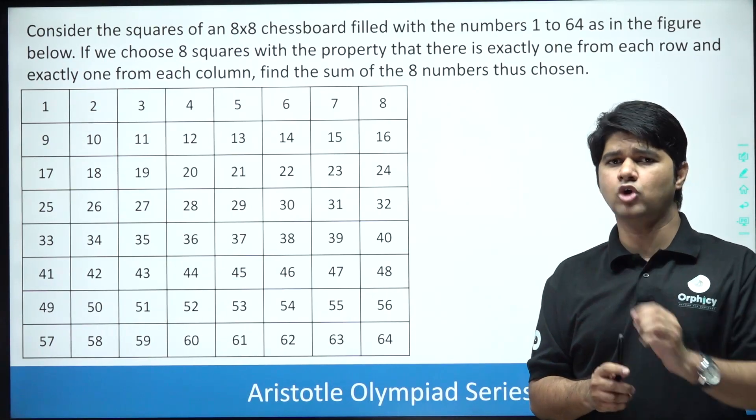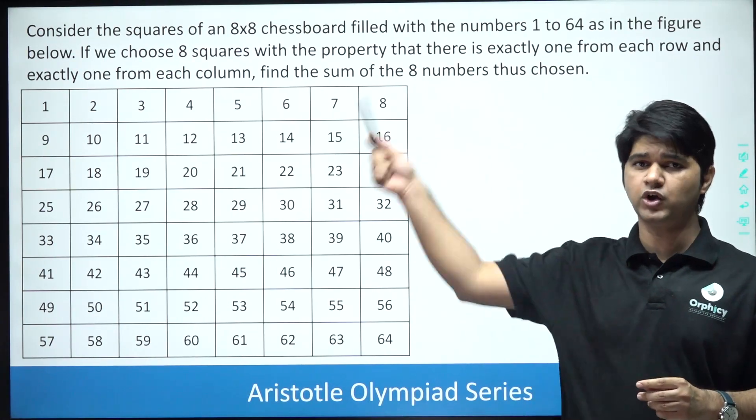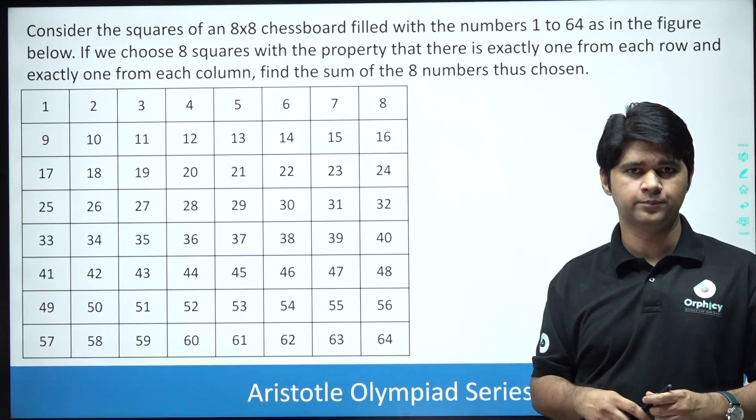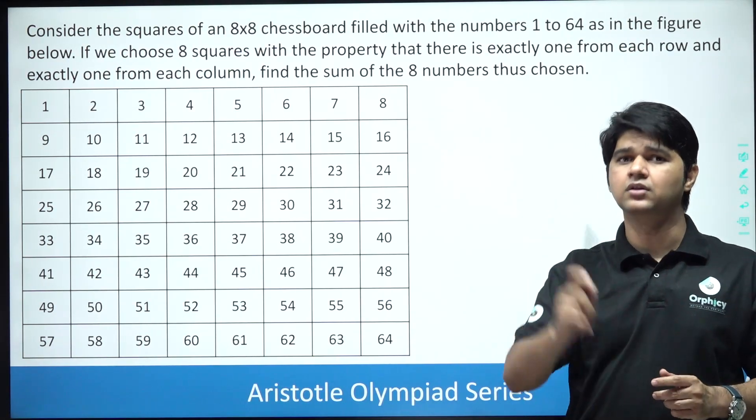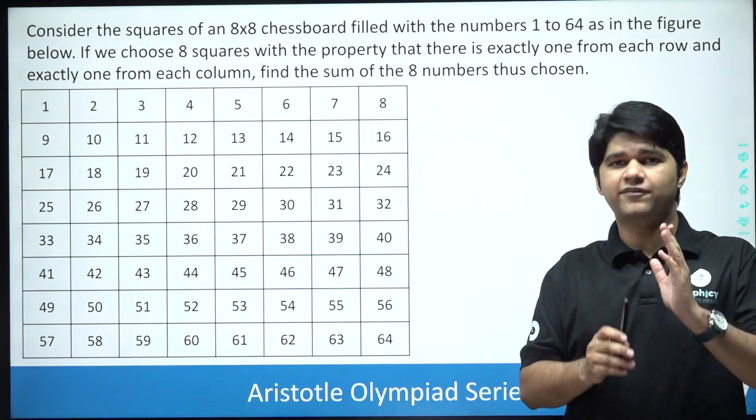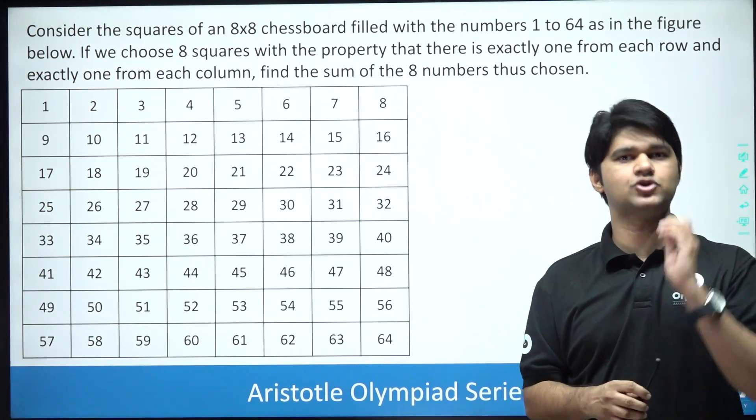Consider the squares of an 8 x 8 chessboard filled with numbers 1 to 64 as shown in the figure. If we choose 8 squares with the property that there is one from each row and one from each column, find the sum of the 8 numbers thus chosen.